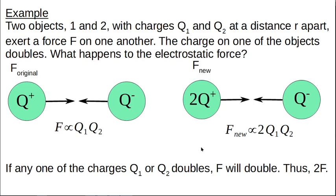Let's have a look at the consequences of this proportional relationship. If you've got two objects, one and two here, with charges Q1 and Q2 at a distance R apart, here's the distance R apart, they are exerting a force on each other. As you can see, I've got Q plus and Q minus, so these two are attracted to each other.